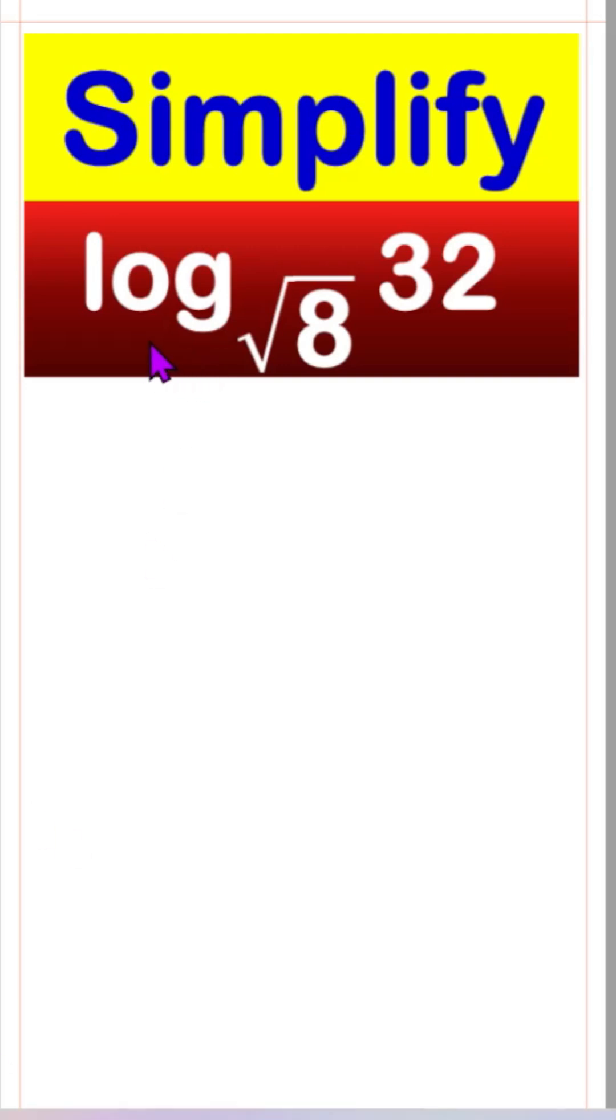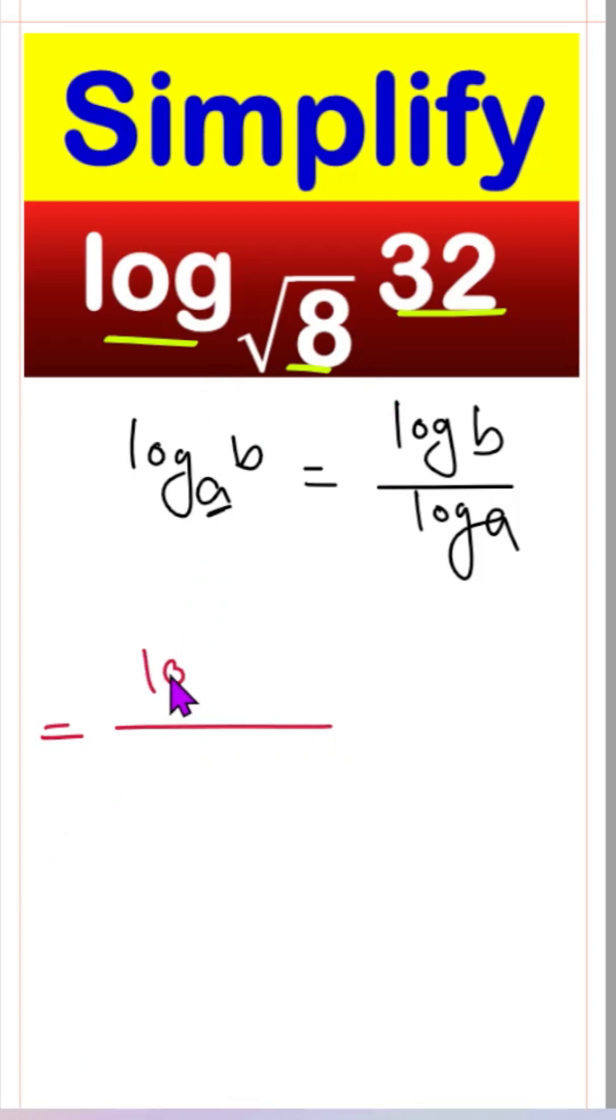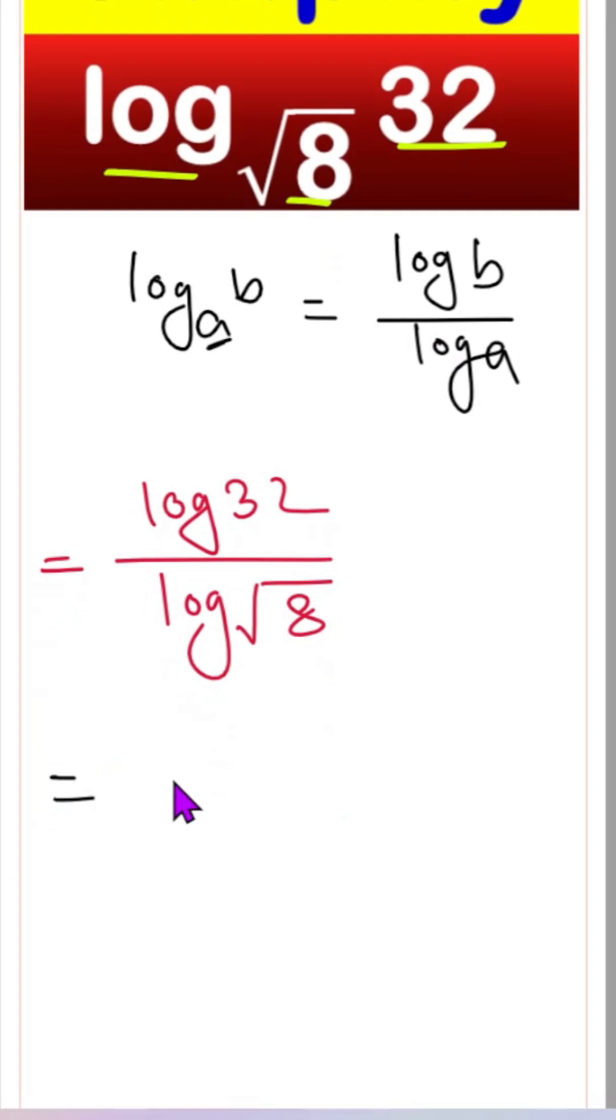Simplify log base root 8 of 32. We know log base a of b means log b divided by log a. We can write this as log 32 divided by log root 8.